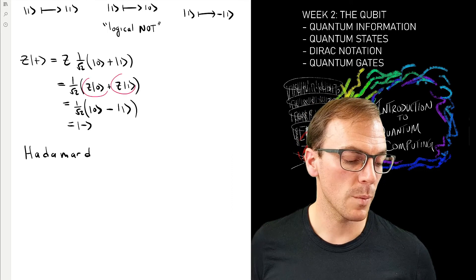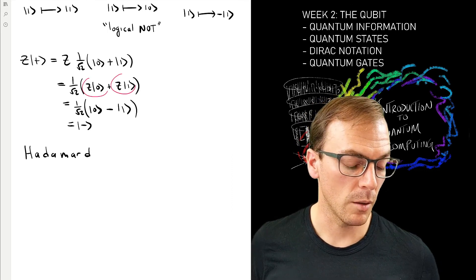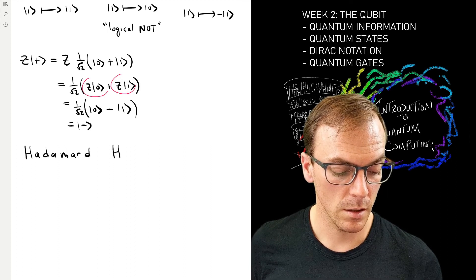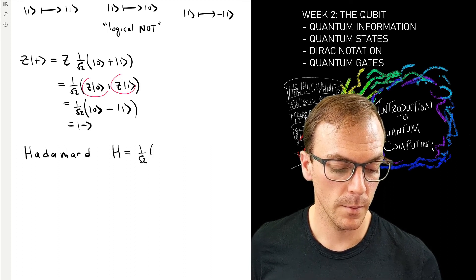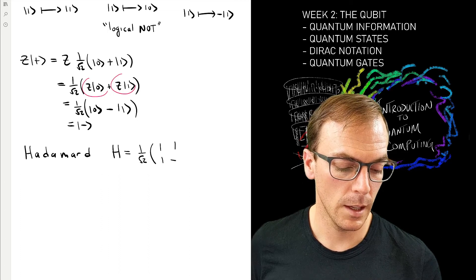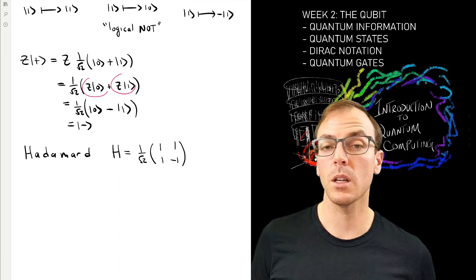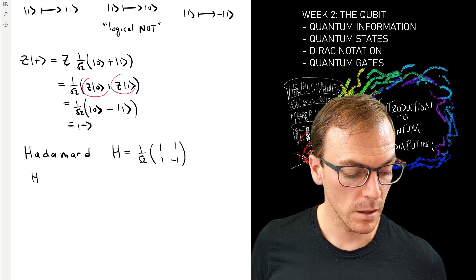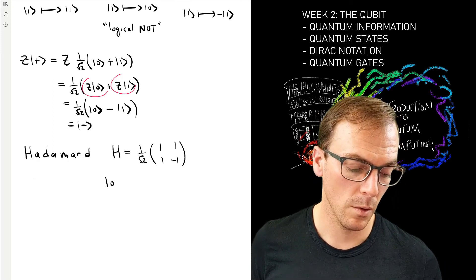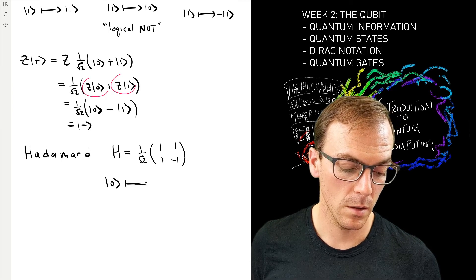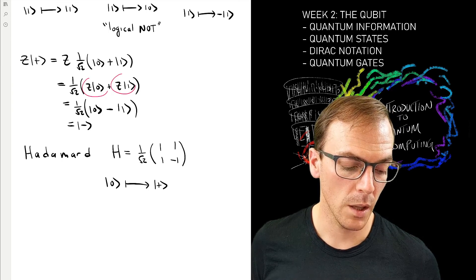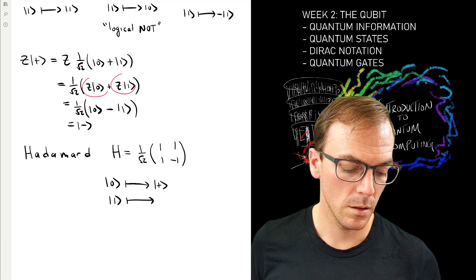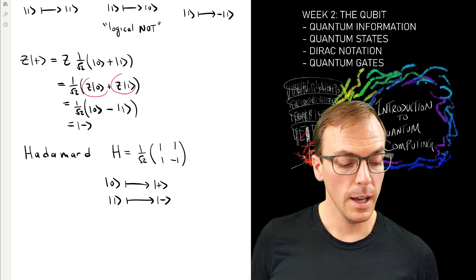That's with a very special operation that we're going to see over and over again, called the Hadamard gate. Its matrix representation looks like this, but what it does is it takes the zero to the plus state and the one to the minus state.